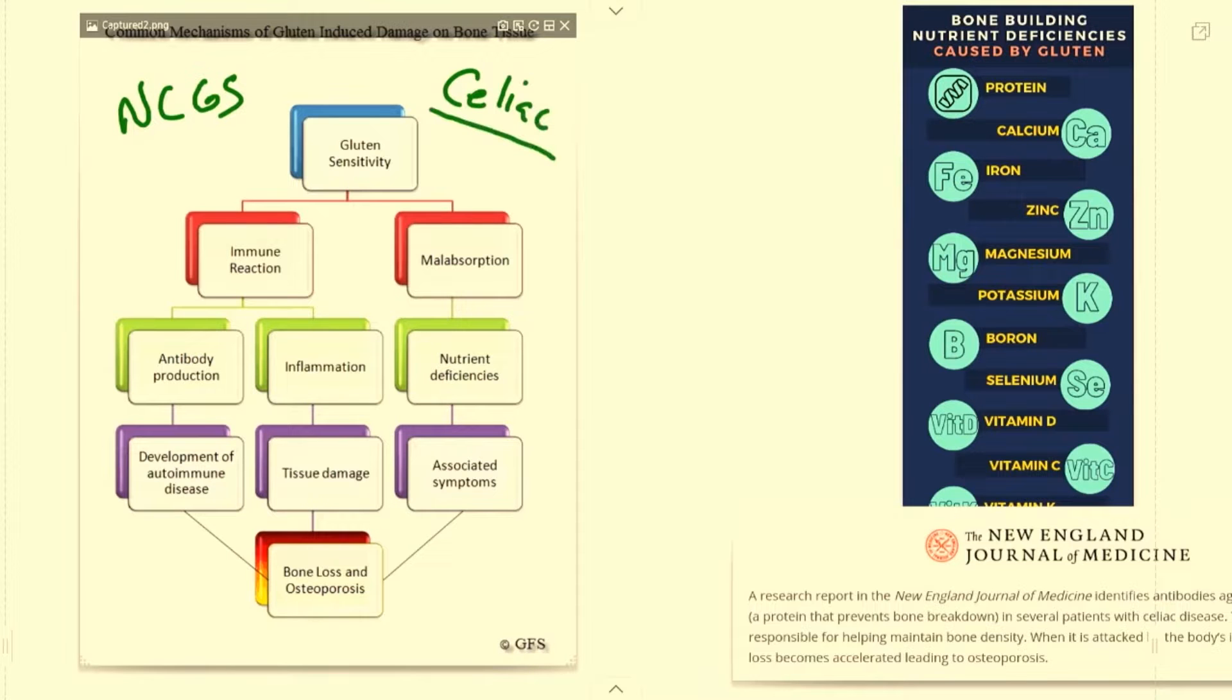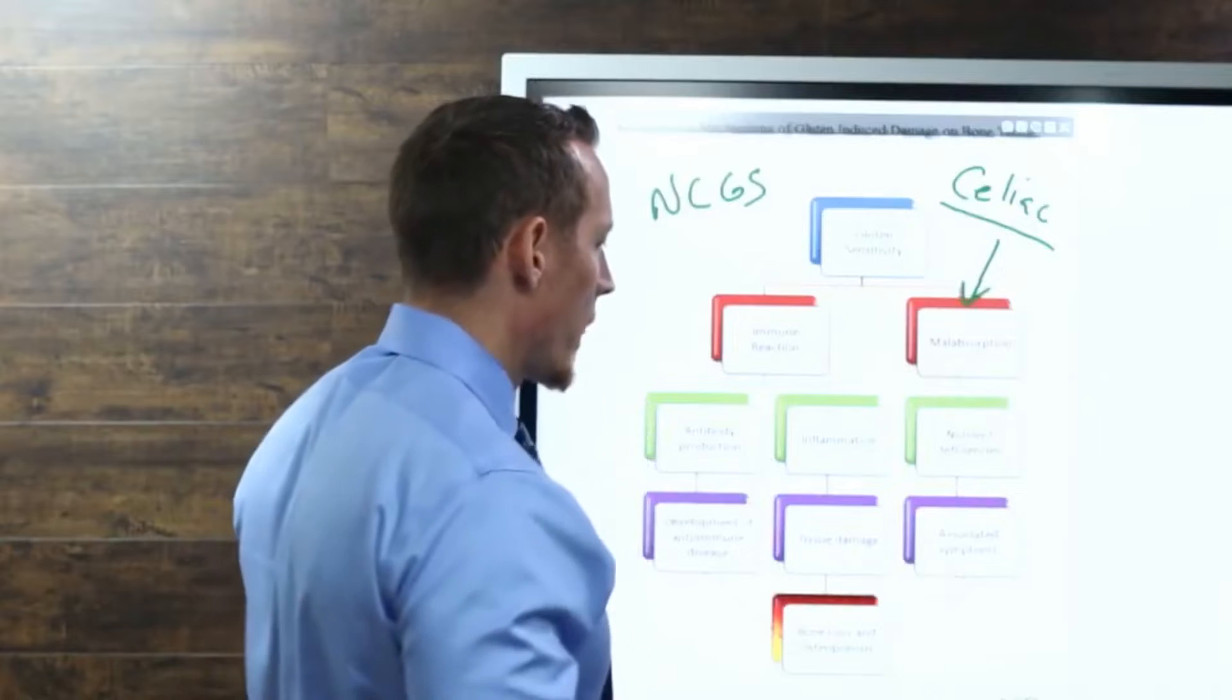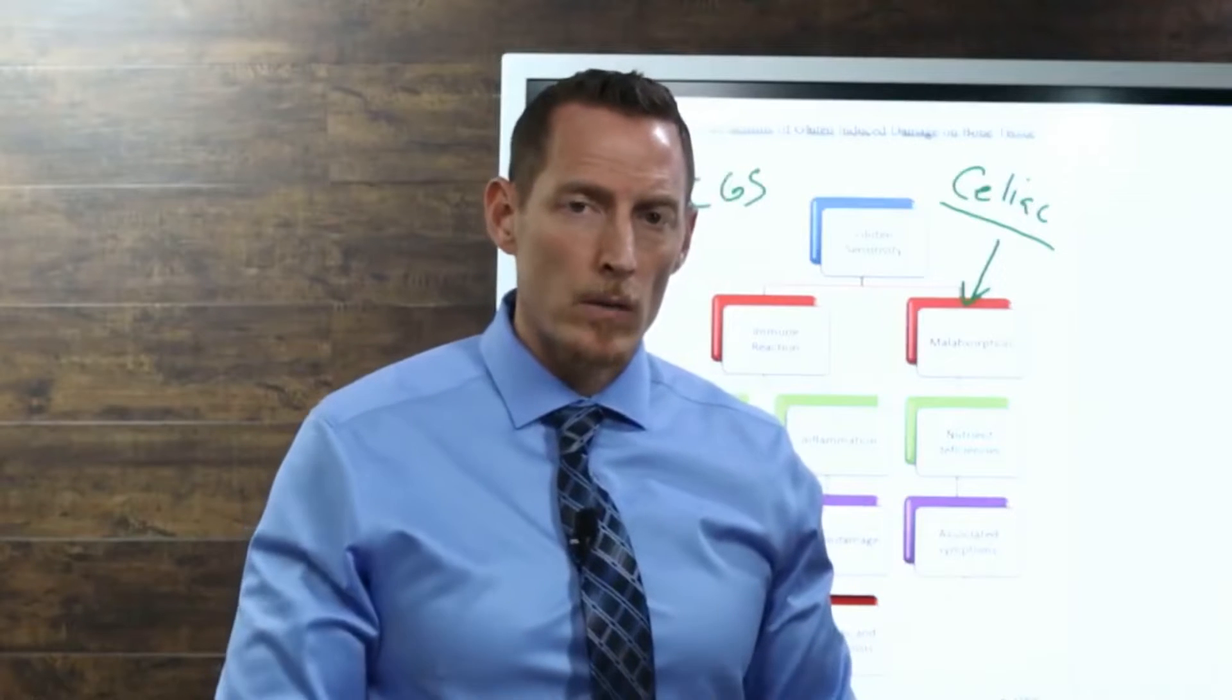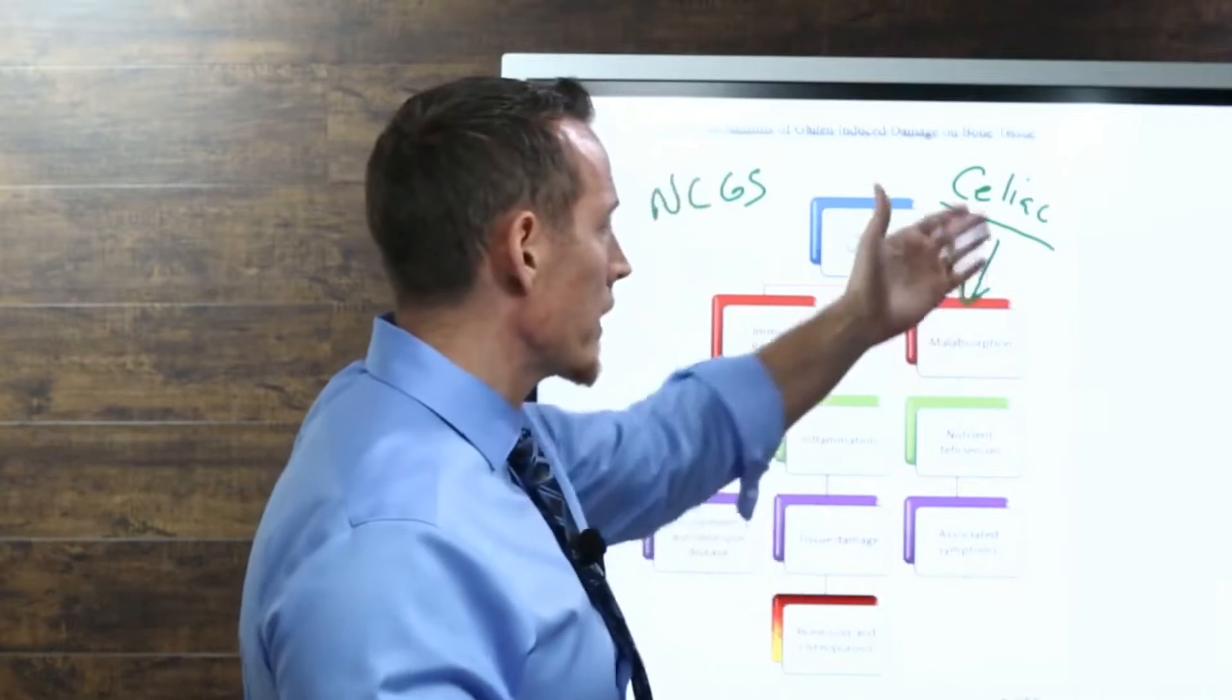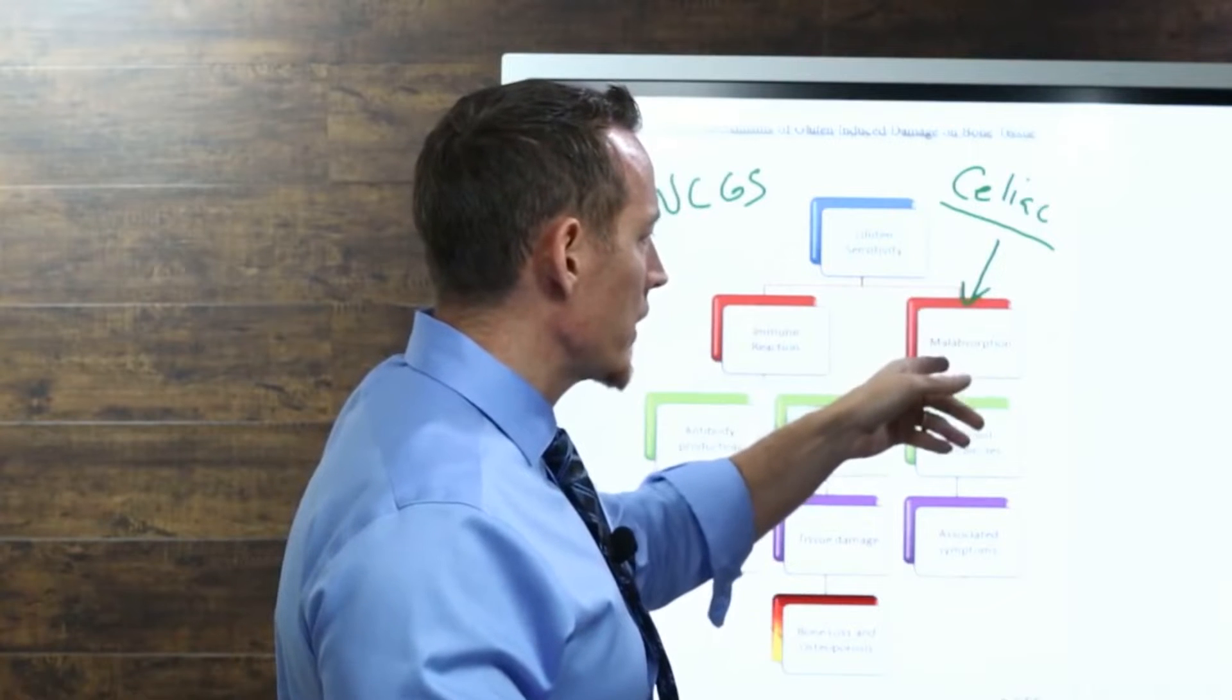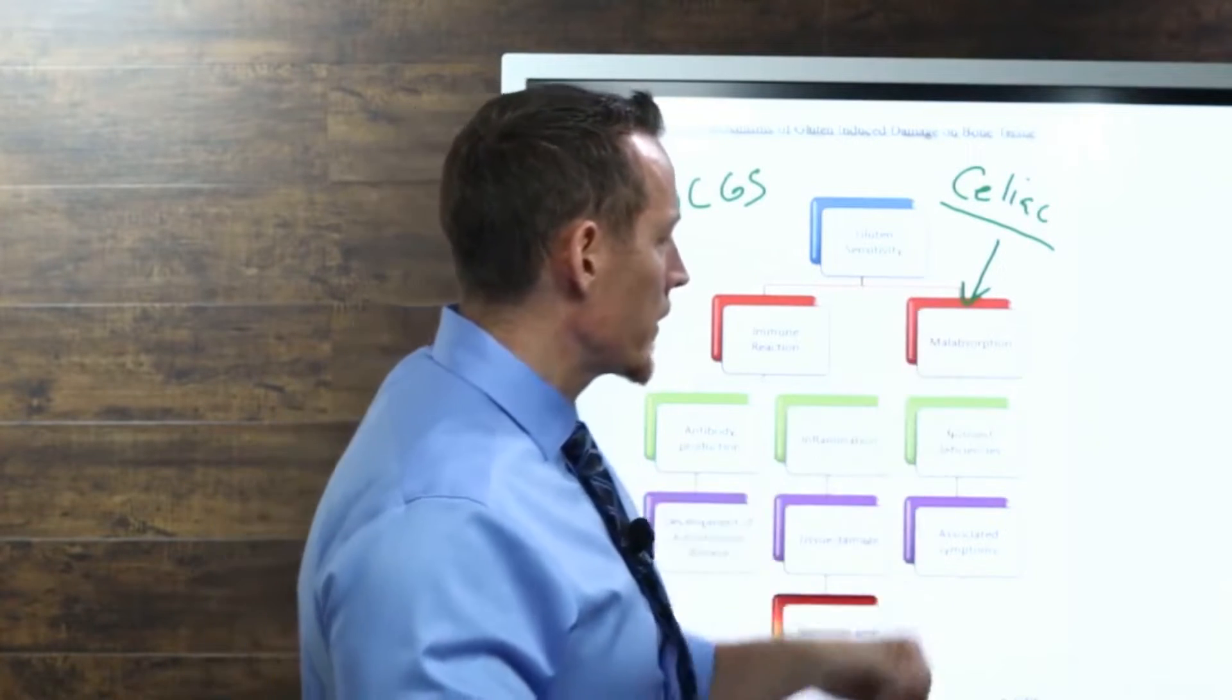suffer greatly from malabsorption. If you've got a diagnosis of celiac disease, you probably got that diagnosis because you went to your doctor with chronic diarrhea, chronic gastrointestinal pain, or wasting where you were losing weight. They probably did an intestinal biopsy and found something called villus atrophy.